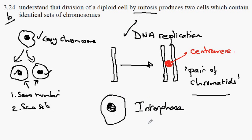The process in which the copies of the chromosome are separated is dealt with in 324C.